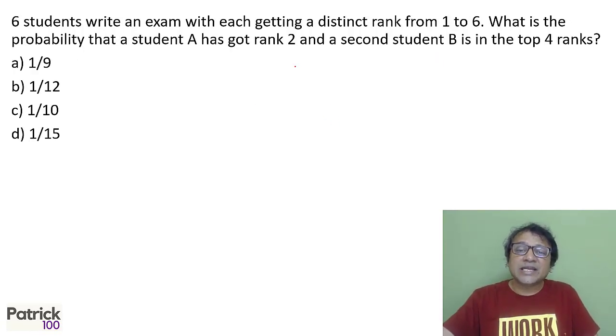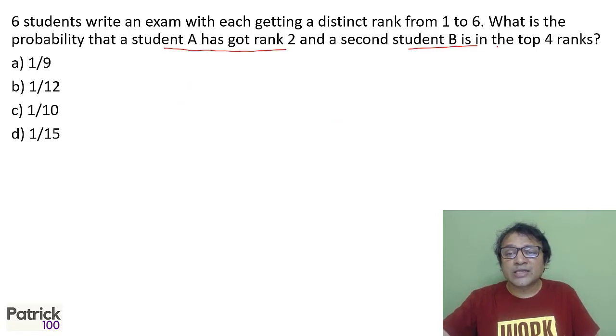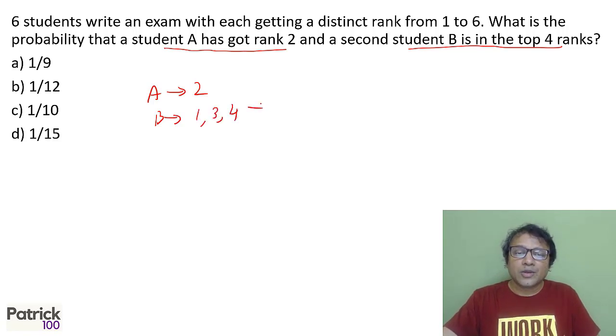Six students write an exam with distinct ranks from 1 to 6. What's the probability that student A gets rank 2 and student B is in the top 4 ranks? A gets rank 2, one way, and B can get 1, 3, or 4, three ways, giving 3 favorable outcomes. Total ways for A and B is 6 times 5, or 30. Probability is 3 out of 30, or 1 out of 10.